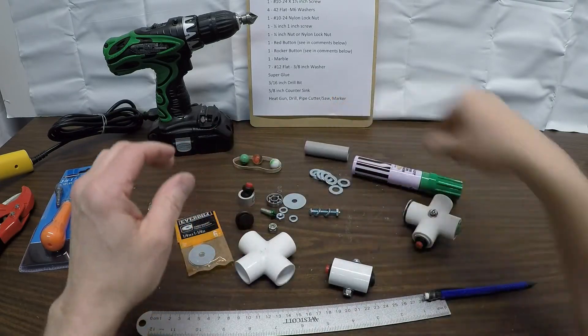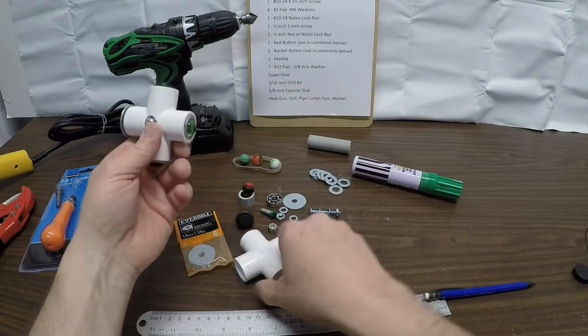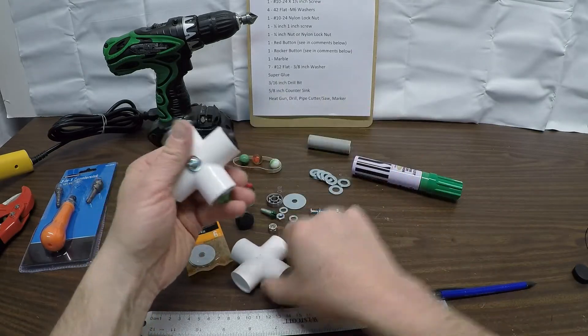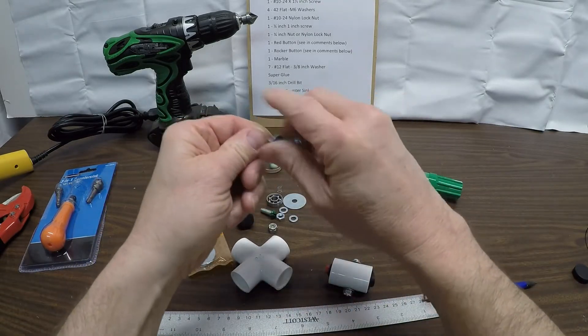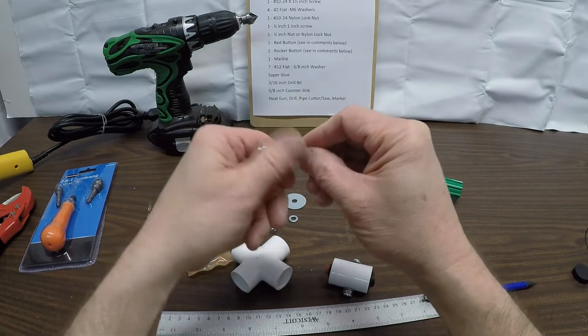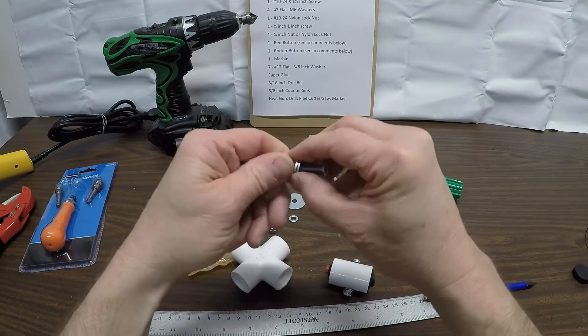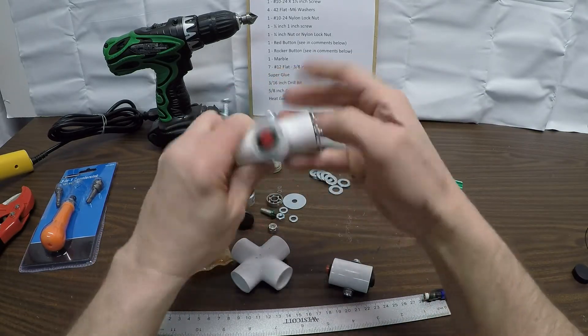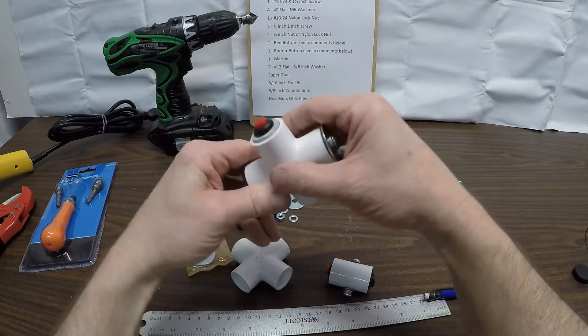You need a cross, two washers - they're called 42 flat m6 washers. They just have to fit on here and you're going to use those to give a little less friction on either side of the pipe.